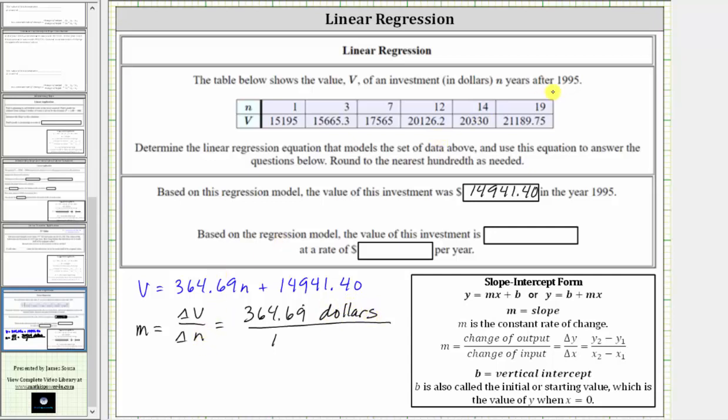And because n is the number of years after 1995, the change in n would be in years. So this is one year. So the slope is telling us the value increases by 364.69 dollars per one year, or just per year.